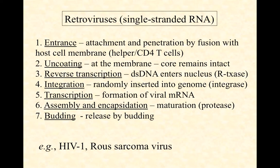Retroviruses tend to be enveloped, and HIV is a prime example. Host membrane fusion occurs between the viral envelope and the target cell membrane. The target cells are CD4 helper T-cells, part of the immune system. This is why people with HIV and AIDS are often highly susceptible to secondary infections that healthy individuals would not be.